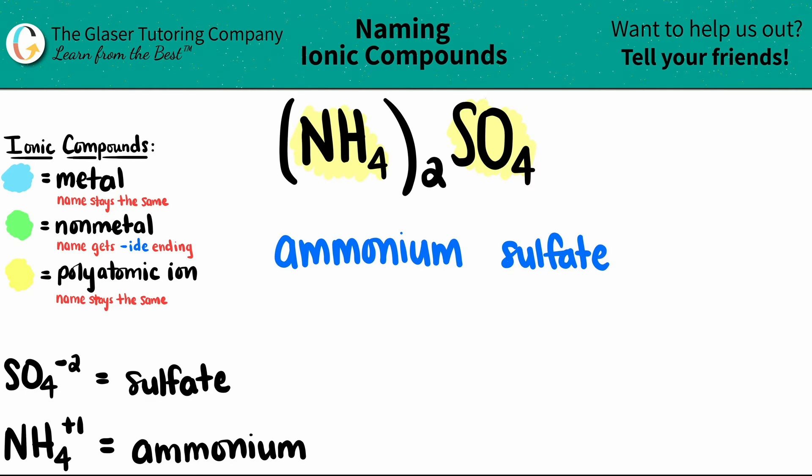Since you're not dealing with any metals, we don't have to include Roman numerals. The name for (NH4)2SO4 is ammonium sulfate.